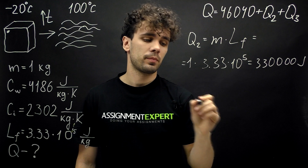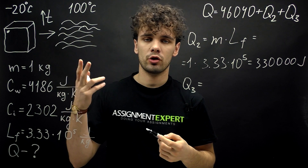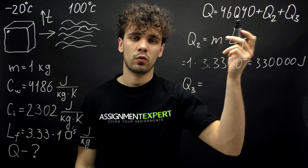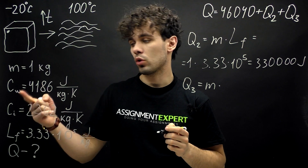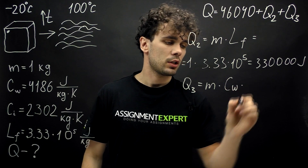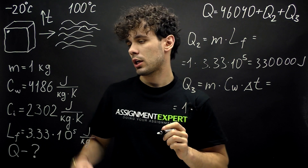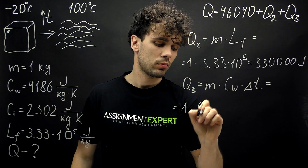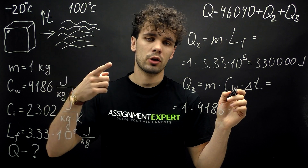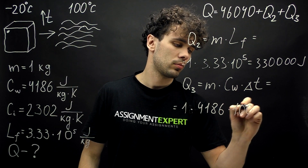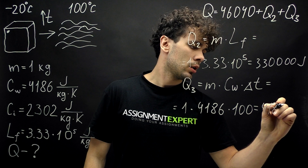Now Q3 — this is the amount of heat needed to change the temperature of water from zero to 100 degrees Celsius. We will use the same formula as for Q1. It goes like this: M times the specific heat capacity of water, times the change of temperature. This is 1 times 4186, times the change of temperature from zero to 100 degrees — so the change is 100. This gives us 418,600 Joules.